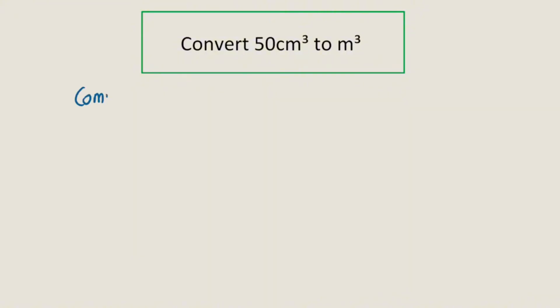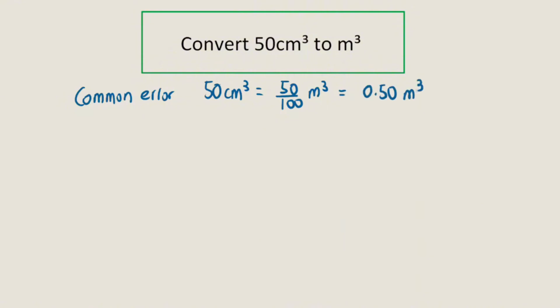A common error that I see in most students is when converting 50 cm³ to m³, they'll just simply divide 50 by 100 and get 0.5 m³.